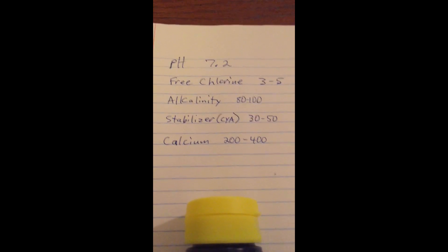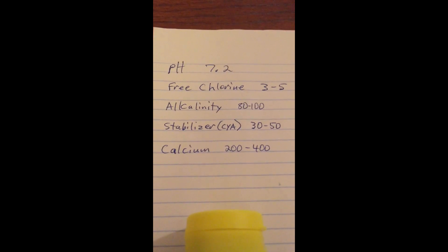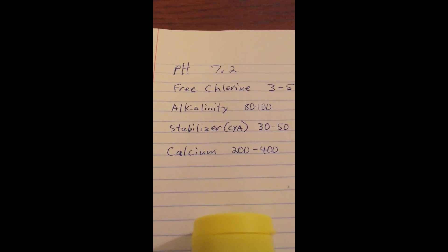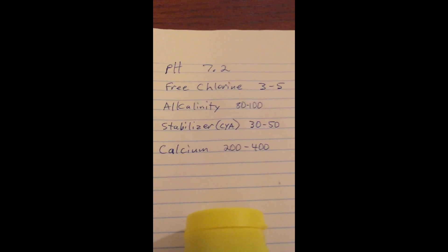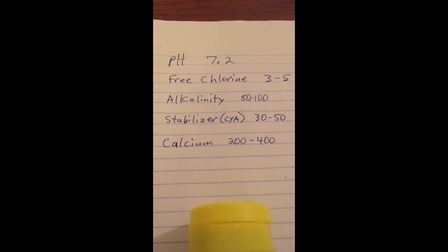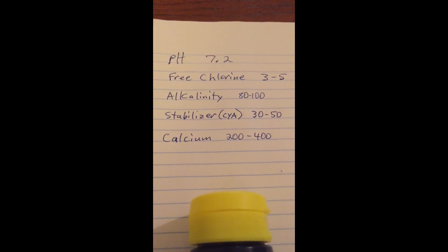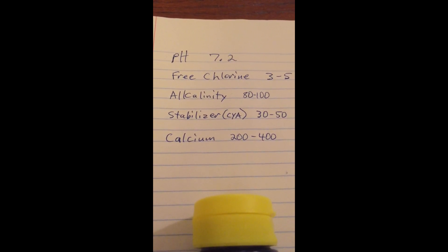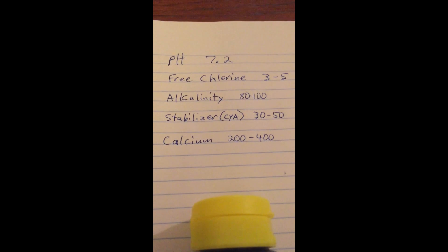Next is your alkalinity. 80 to 100 is the range. I use test strips that test that. But really, alkalinity is a buffer for the pH. So as the pH goes up, the alkalinity goes up. It kind of mirrors it. And then as you add muriatic acid to bring the pH down, the alkalinity will come down. If for some reason something happens to your pool and your alkalinity really bottoms out and it's like a zero, there is an alkalinity increaser that you can put in there to increase your alkalinity specifically to get it in range. But generally, that is not something that you're going to worry about on a weekly basis.